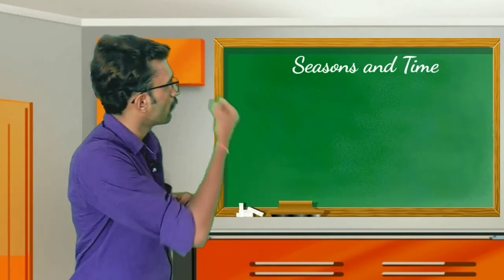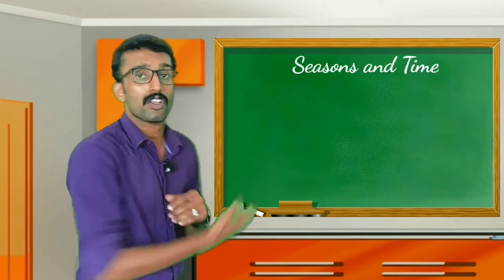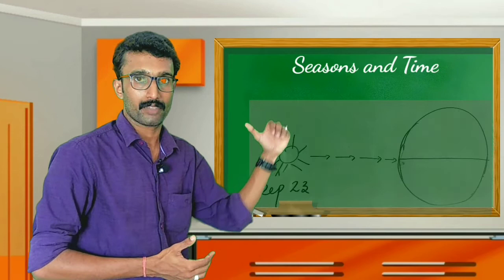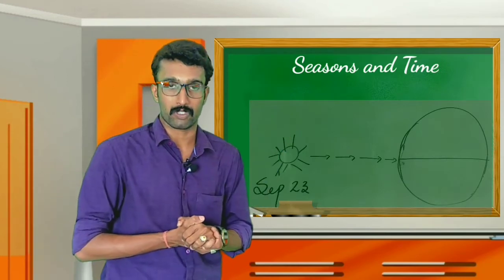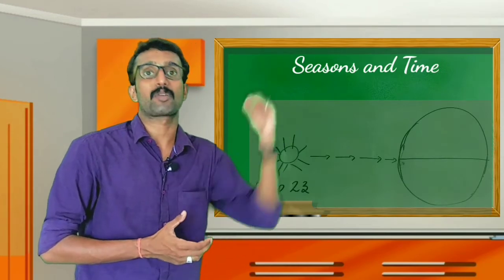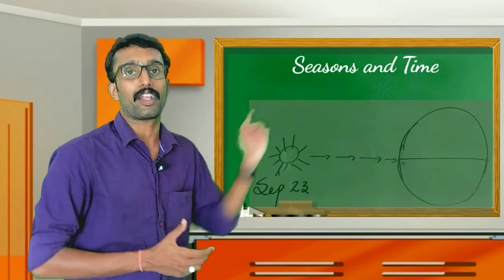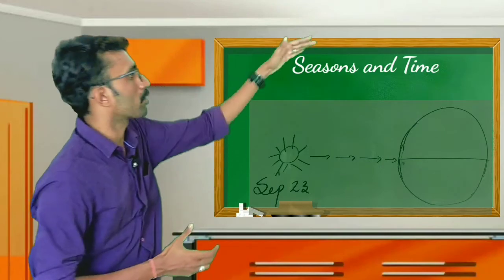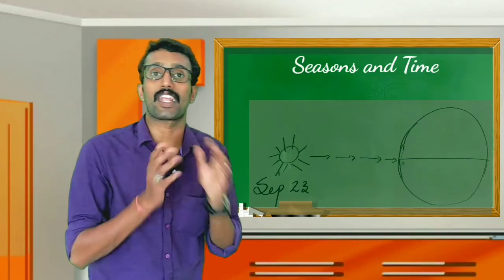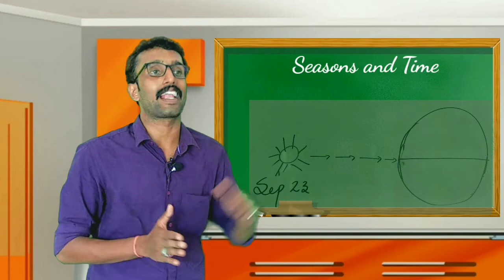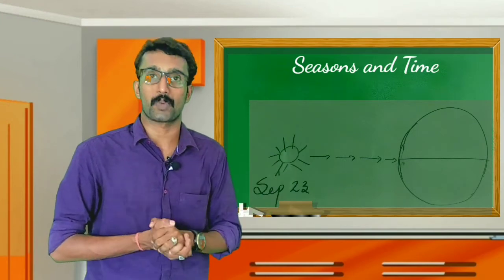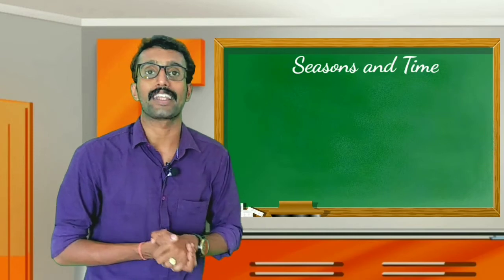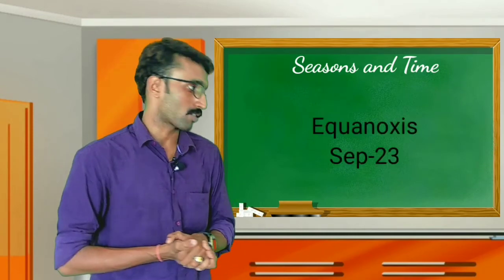After June 21st, the sun is coming back to its original position. On September 23rd, the sun is again over the equator. Again, both hemispheres are receiving equal amounts of sunshine. Again, equal day and night are experienced. That day is also known as the equinox.